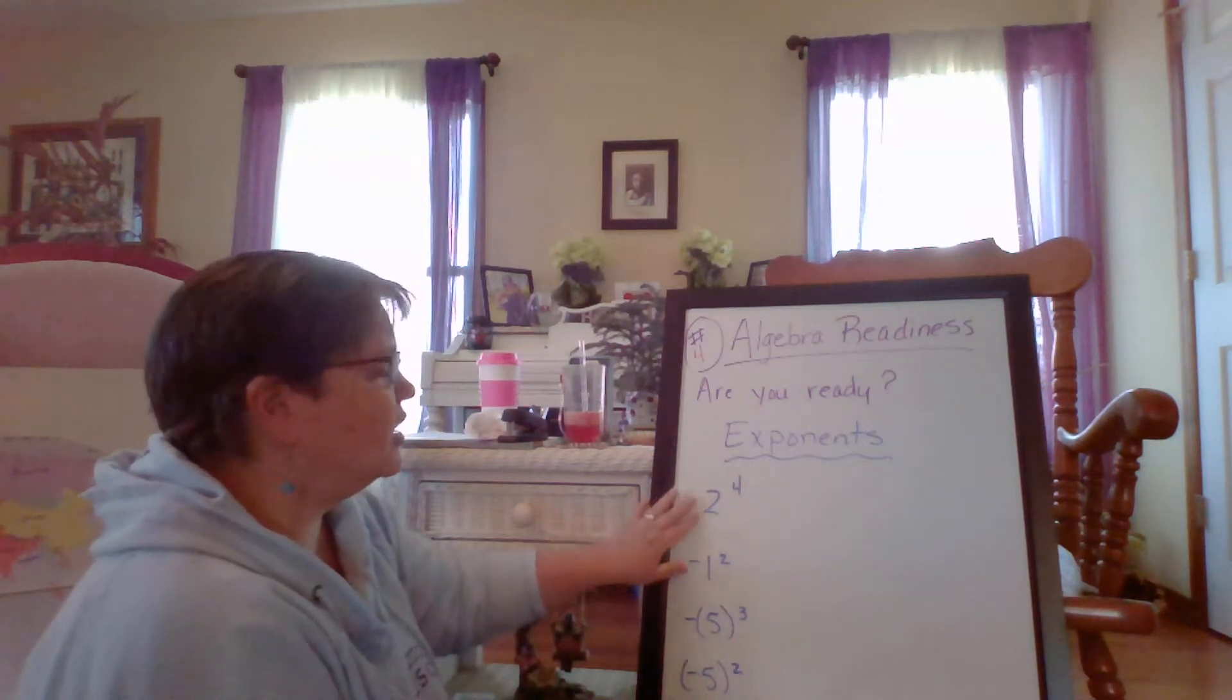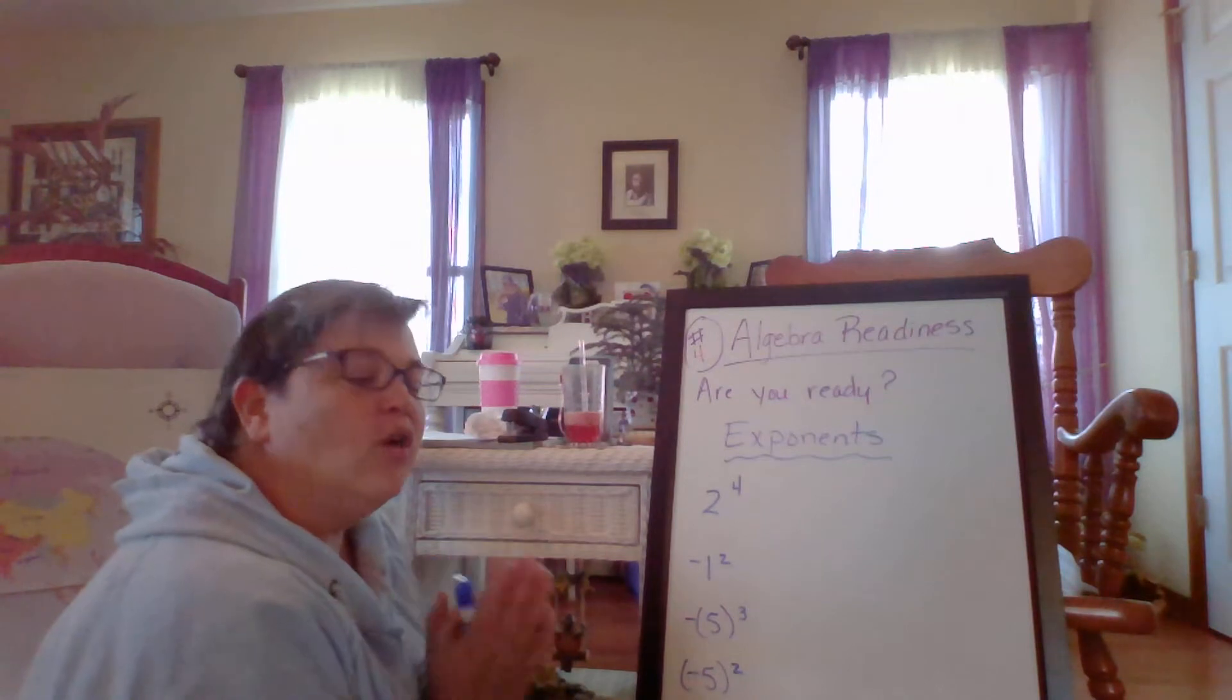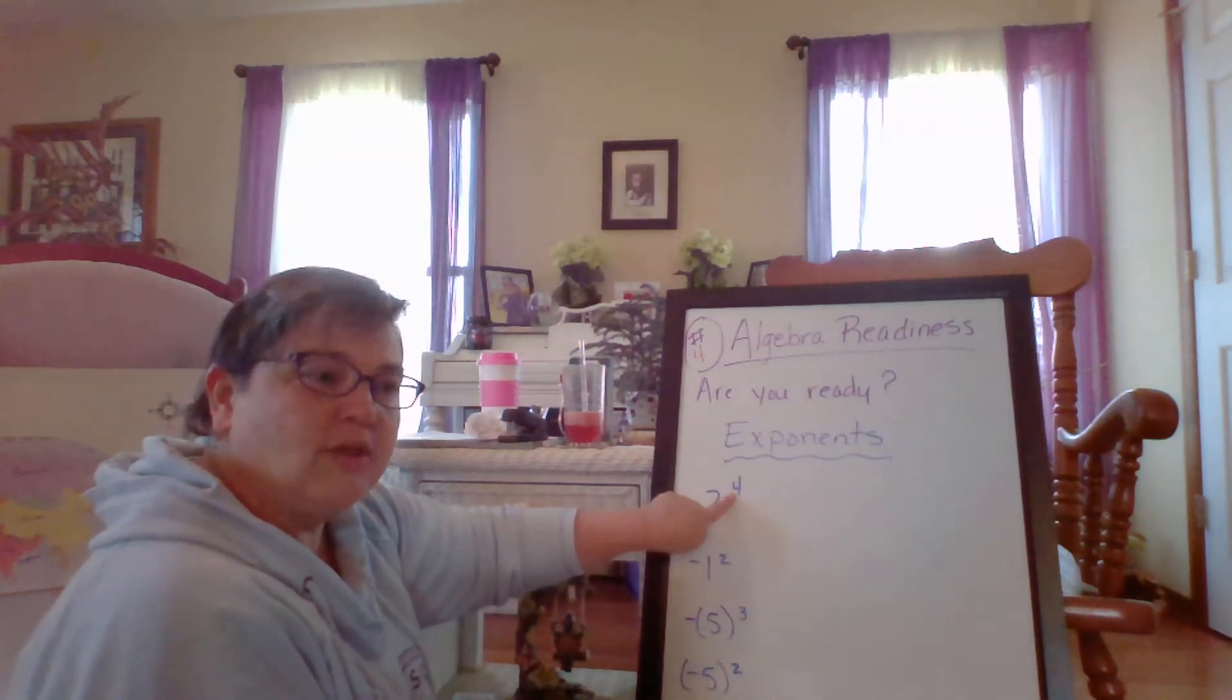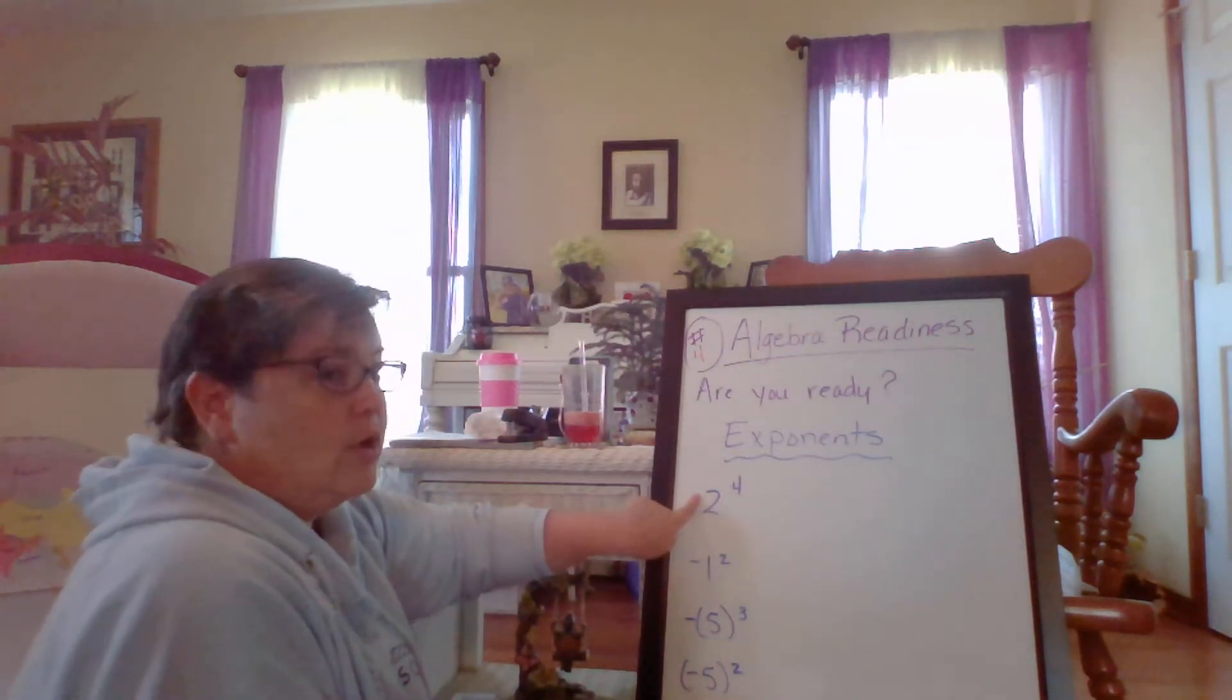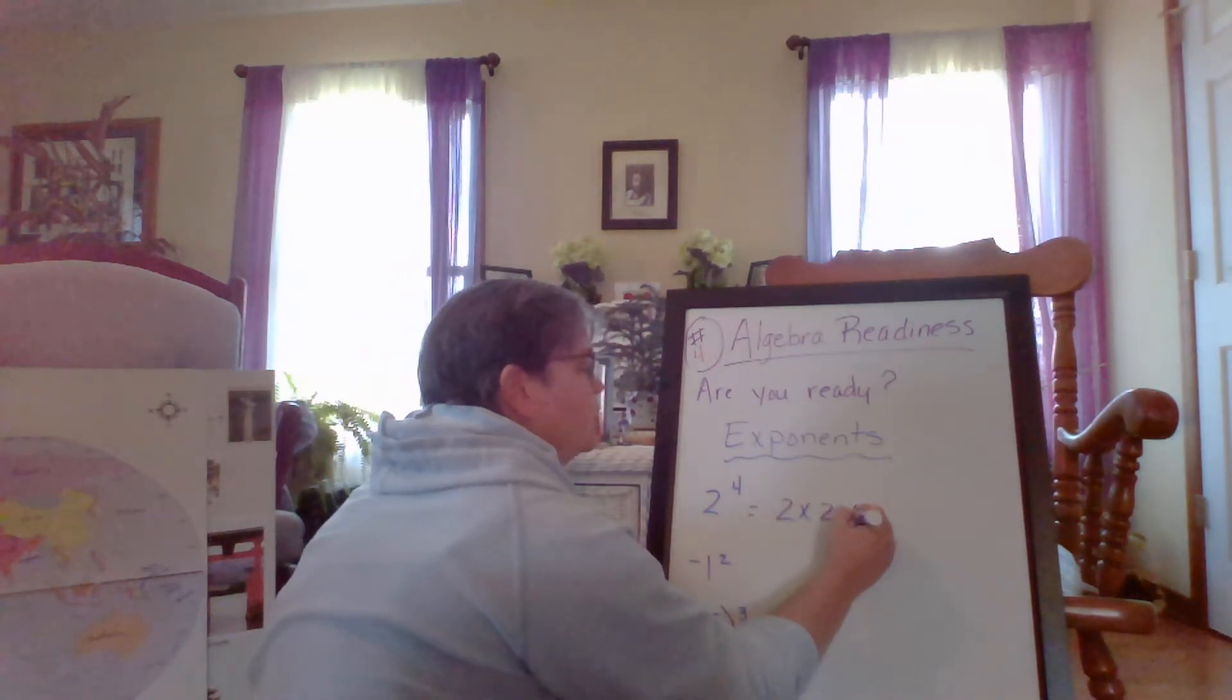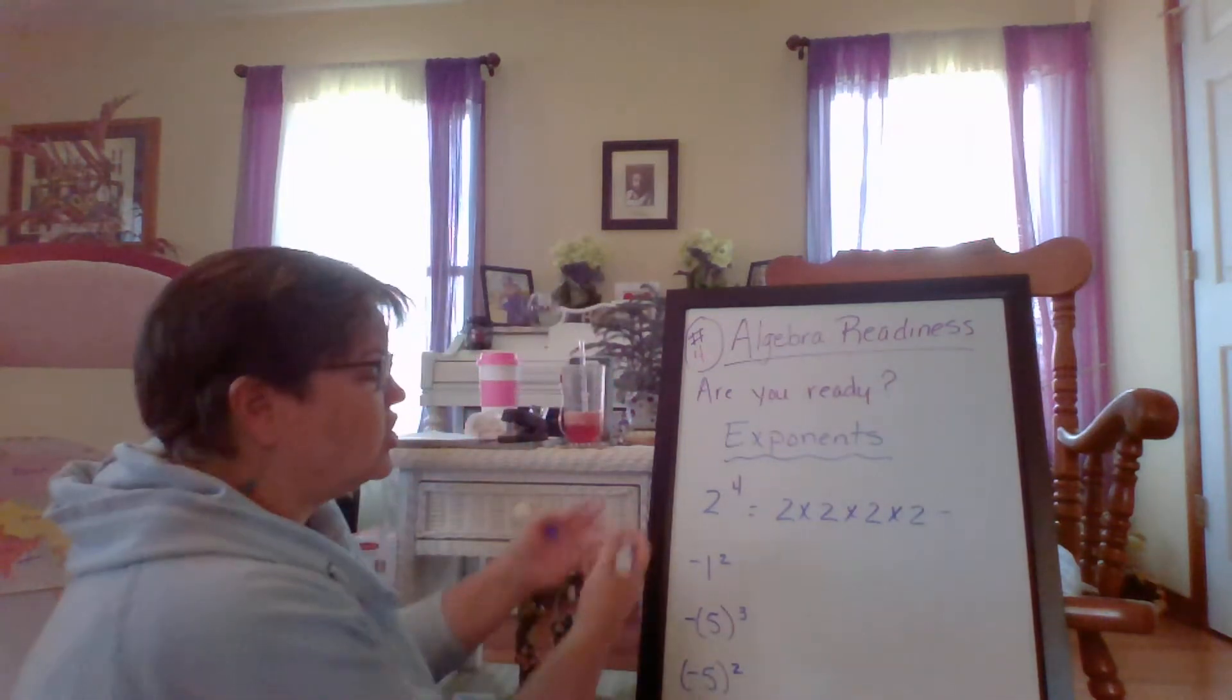Here I have a whole number, two, and I have the exponent four. Now the exponent, all that means is whatever number is here is the exponent. That's how many times you are going to multiply your whole number. So basically this means two times two times two times two. That's all that means. Then we're going to multiply two four times.